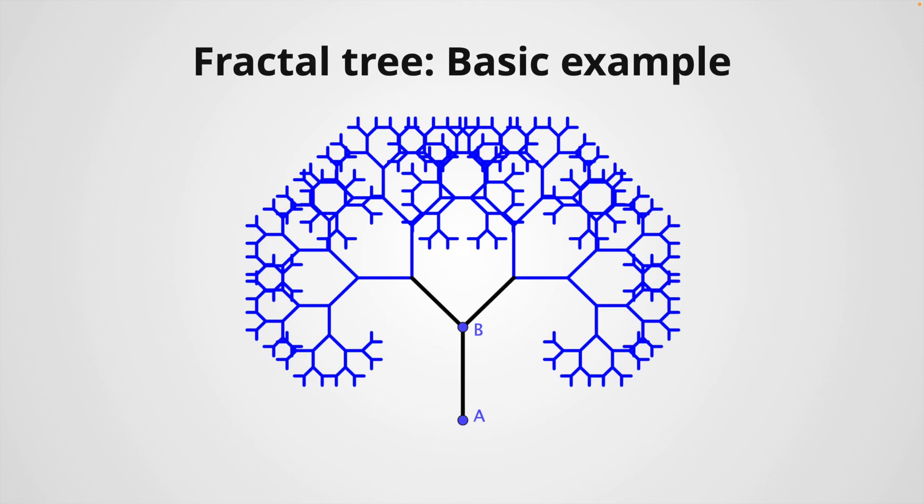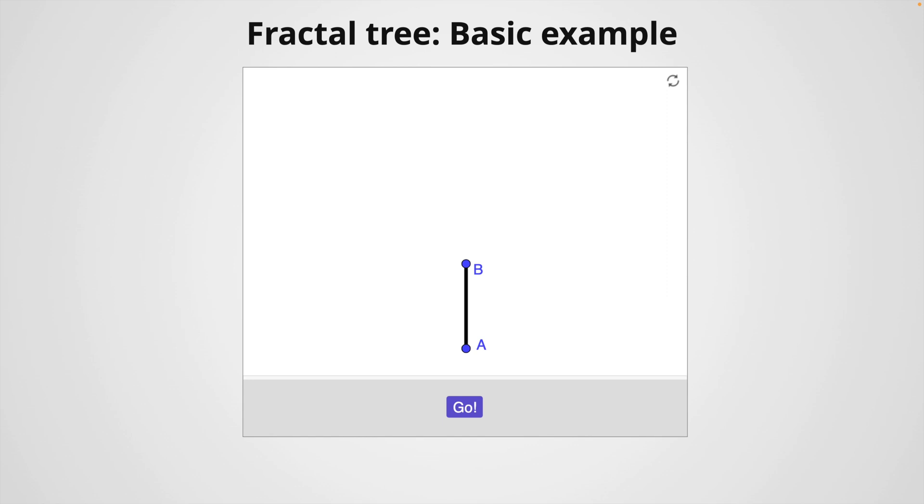Let's begin with the most basic example of a fractal tree. We start with a segment defined from point A to point B, then we create two branches based on this segment. To create the first branch, we define a new segment by rotating the original segment with respect to point B using a particular angle, in this case I used 5π/4, and shrinking it by a given factor, which is 3/4 in this case, or 0.75.